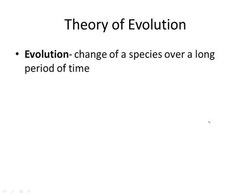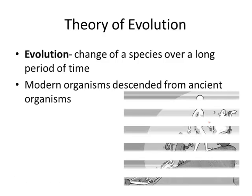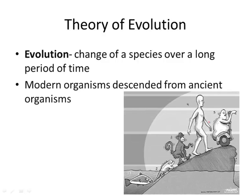The theory of evolution is that species will change over time. This is how we have our modern organisms that exist right now — they descended from ancient organisms. Most people think of evolution as happening like a fish becoming a salamander, then a monkey, then us. This is not how it happens. It's a series of small changes.